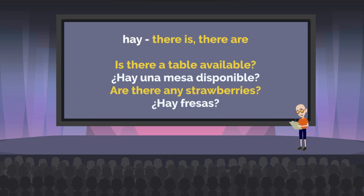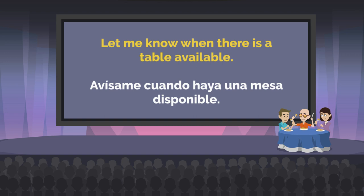Here are a couple of examples in the form of questions: 'Is there a table available?' You just plug in the noun — plural or singular — and you never have to conjugate that verb. It's outstanding. So we're going to be using this same thing in the subjunctive: 'Let me know when there's a table available.'